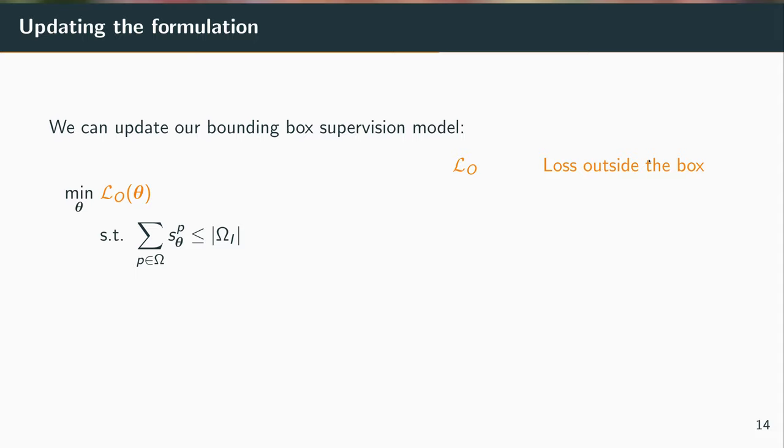And we still have the constraints on the overall size. So the total predicted size should still be smaller than the bounding box. But we can add a new series of constraints. So one constraint per segment in the segment set.